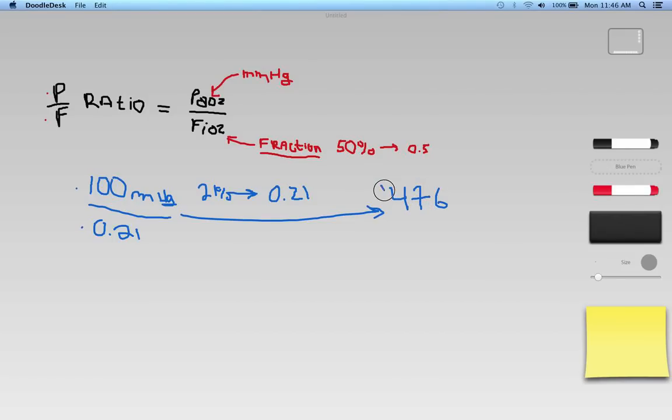And that gives me about 476. That gives me a ratio of 476. Let's just talk about what our normal ratios are, generally speaking. Normally, you want a PF ratio of about 300 and up. 300 and up is generally considered normal.